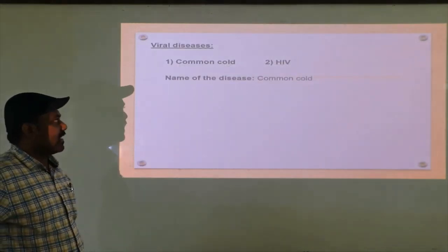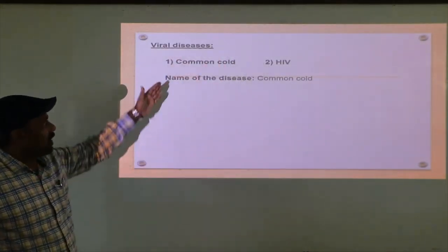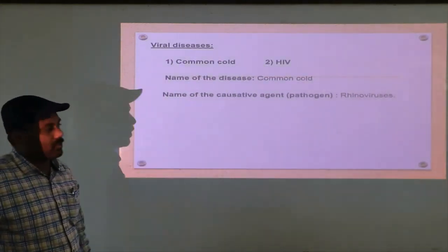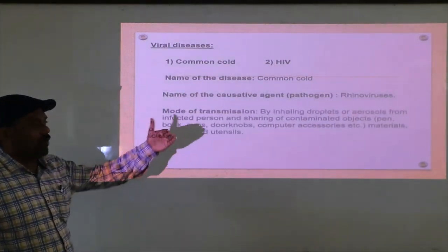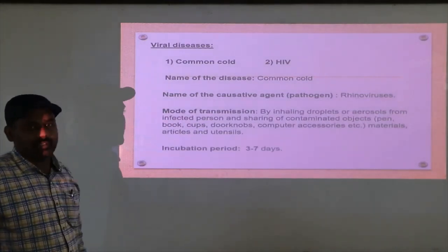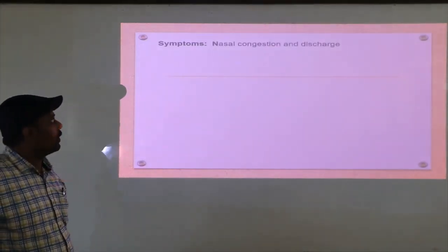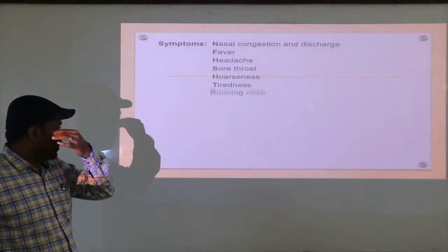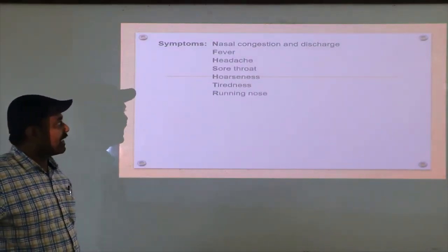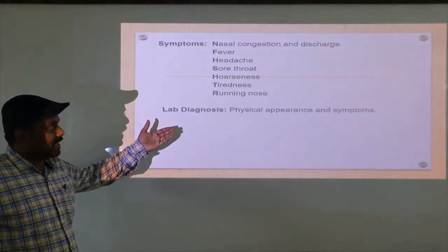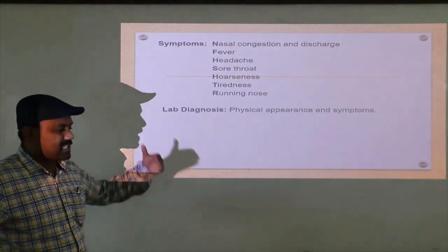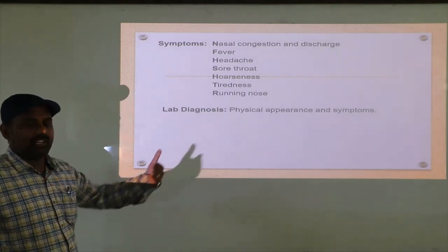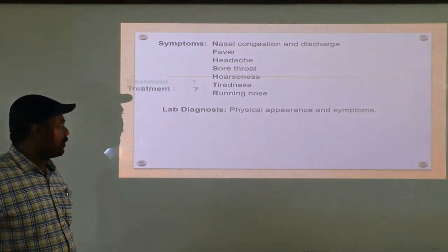Viral diseases — that is common cold and HIV. HIV we will discuss in the next class. So we already discussed about common cold: the name of the disease is common cold, the causative agent or pathogen was rhinoviruses. Next, mode of transmission, incubation period — that is usually 3 to 7 days. Next, the specific symptoms for common cold include nasal congestion, fever, headache, sore throat, hoarseness, tiredness, running nose, etc. The lab diagnosis: there is no such particular test for this — just by means of physical appearance or what kind of symptoms are shown by the person; based on that we can diagnose common cold.